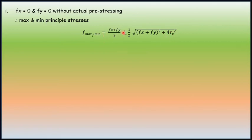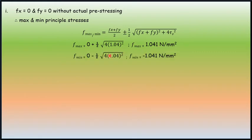So fx and fy values are 0. Substituting these and value of τv into this particular equation, fmax becomes plus 1.041 N per mm square and fmin becomes minus 1.041 N per mm square.